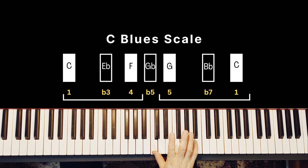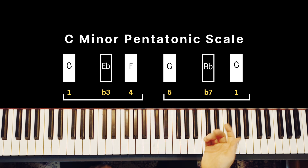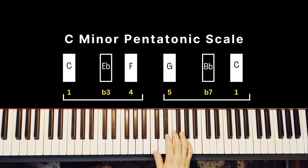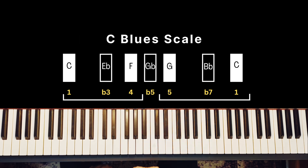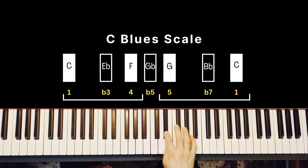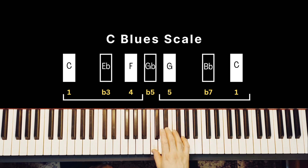That note is called the blues note. So our minor pentatonic scale is this, and our blues scale is this - exactly the same notes, but just adding that blues note in there.